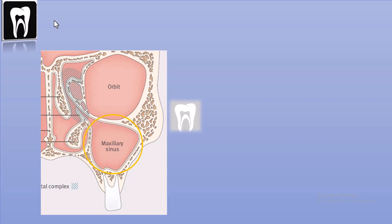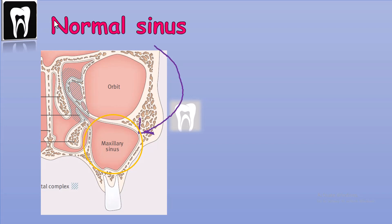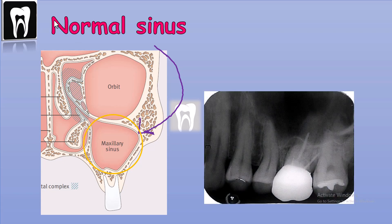There are many different lesions that can affect the maxillary sinus. A normal or healthy sinus is seen clear, or radiolucent, in the radiograph — meaning there is only air inside the sinus.